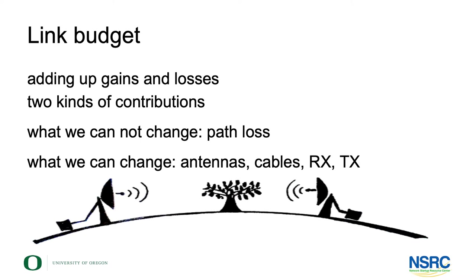Much as you do with a financial budget: you have something, you lose something, you win something, and at the end of the day you have something left. There are two kinds of contributions to a wireless link budget: things we cannot change and things we can change. What we cannot change is the loss due to distance. What we can change: antennas, cables, amplifiers, output power, and receive sensitivity.